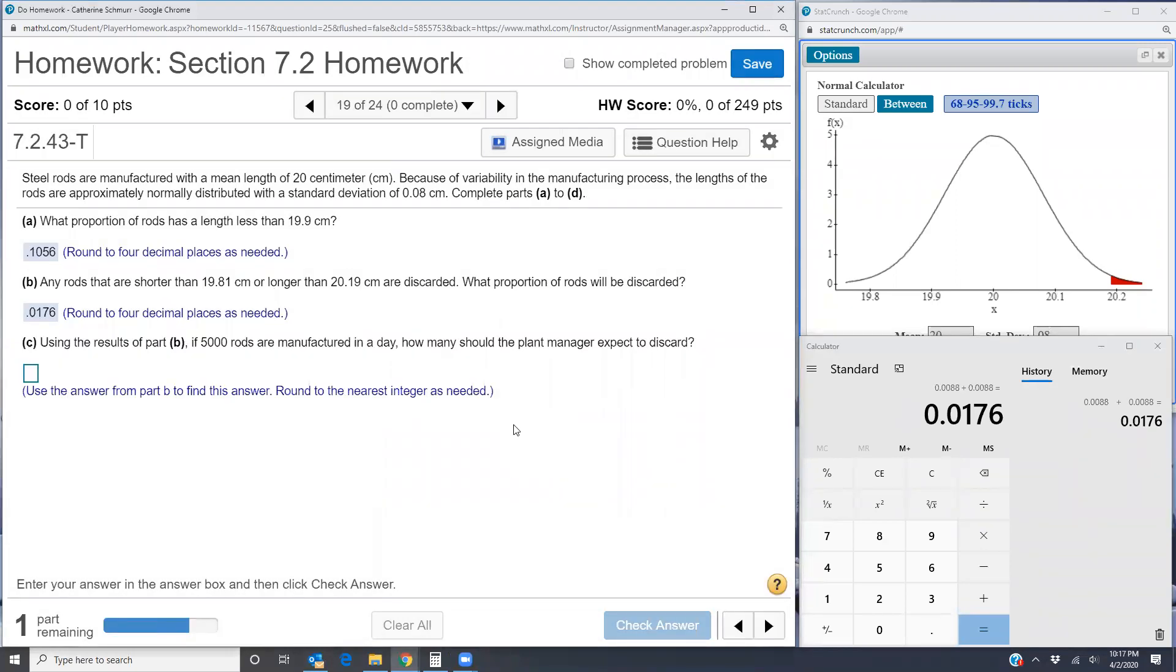Now part C, using the results of part B, if 5,000 rods are manufactured in a day, how many should the plant manager expect to discard? So this is the proportion, part B, that's the proportion that the plant manager has to discard.